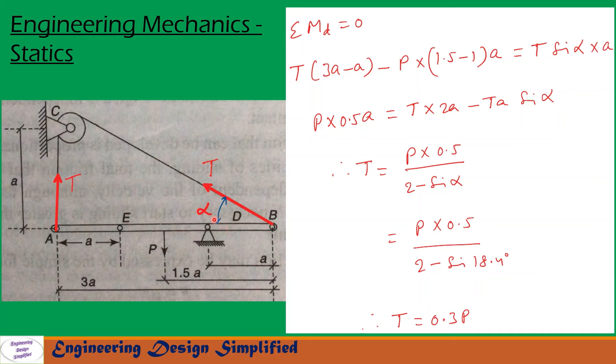Now, let us take moments about this hinge D. This P will produce counterclockwise moment and T also produces counterclockwise moment about D. And this T will produce clockwise moment about D.